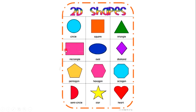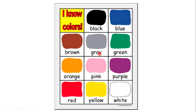Rectangle, oval, diamond, pentagon, hexagon, octagon, semicircle, star, and heart. Now the colors — do you know the colors? Repeat after me: